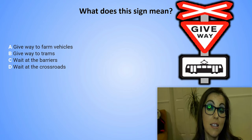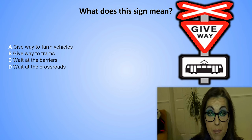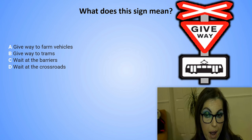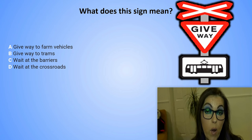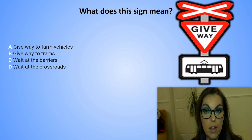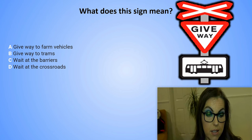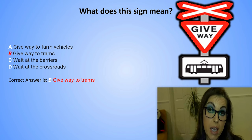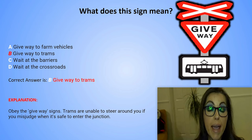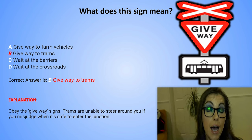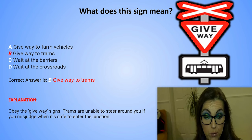What does this sign mean? A. Give way to farm vehicles. B. Give way to trams. C. Wait at the barriers. D. Wait at the crossroads. The correct answer is B. Give way to trams. Explanation: Obey the give way signs. Trams are unable to steer around you if you misjudge when it's safe to enter the junction.